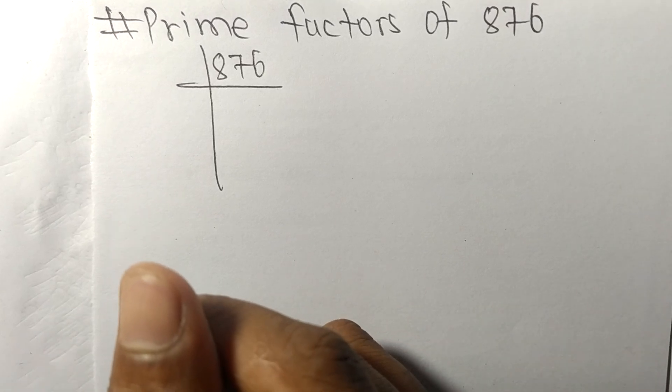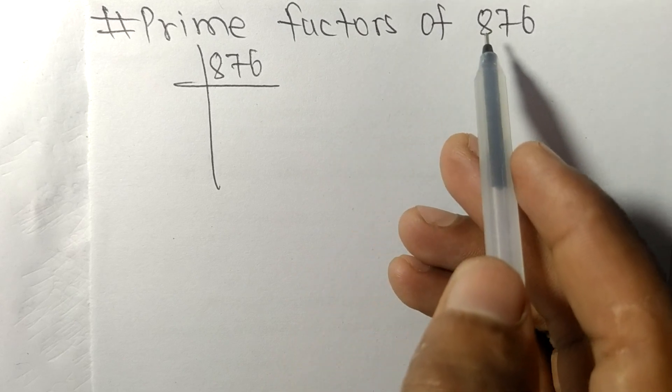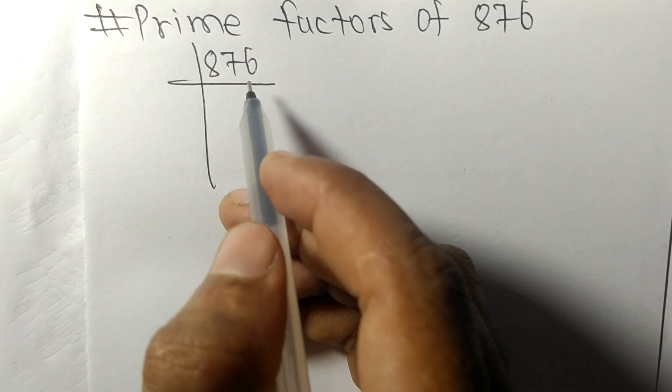So today in this video we shall learn to find the prime factors of 876. It contains an even number six, so this whole number is divisible by two.